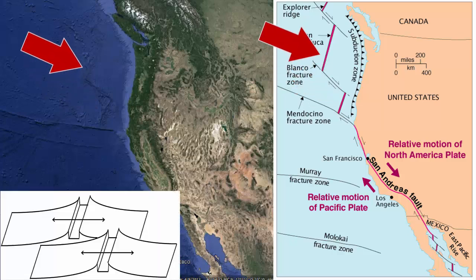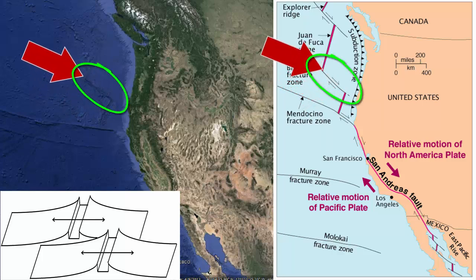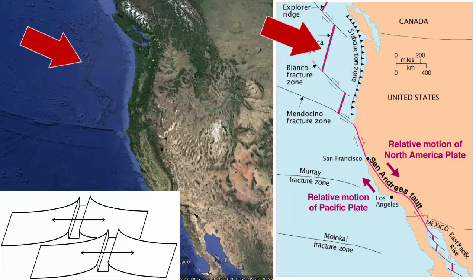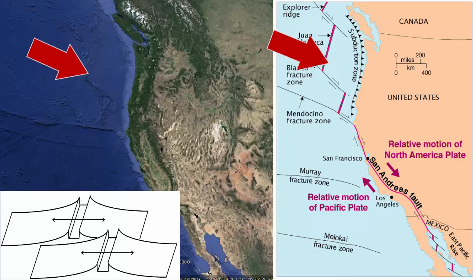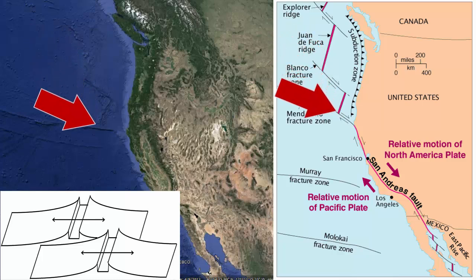Like all such centers, it is offset at regular intervals by transform faults. If we move along the ridge north, we hit this transform boundary, which then connects to the continuation of the spreading centers a bit west. If we go back and follow the ridge south, we hit another transform that offsets the ridge eastward.